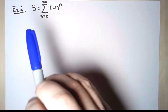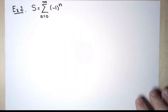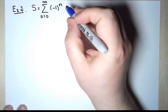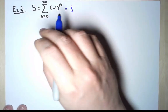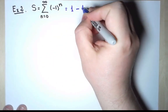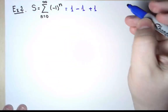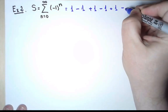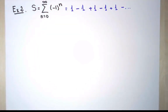My second example is the sum from n equals 0 to infinity of minus 1 to the n. Let's see what the first few terms look like. When n equals 0, I am adding minus 1 to the 0, which is 1. When n equals 1, I am adding minus 1 to the 1, which is minus 1. When n equals 2, I add 1. When n equals 3, I add minus 1. And then I keep going like that forever. I want to compute the value of this infinite sum strictly from the definition.